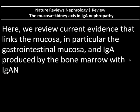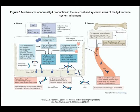In this March edition of Nature's Review Nephrology, a new hypothesis has been produced providing insights on the mucosal-kidney axis in IgA nephropathy. They have reviewed current evidence linking the mucosa — in particular the gastrointestinal mucosa — and IgA produced by the bone marrow with IgA nephropathy. A key diagram shows the mechanism of normal IgA production in the mucosal and systemic arm of the IgA system in humans.